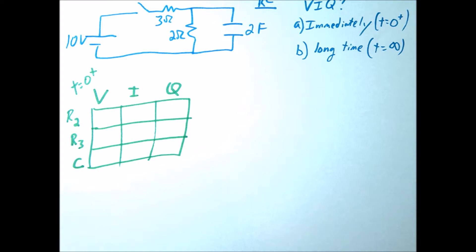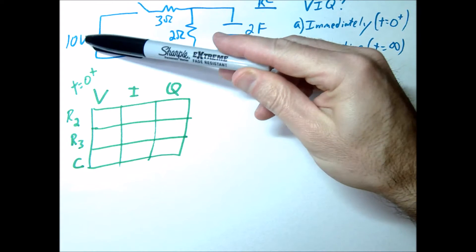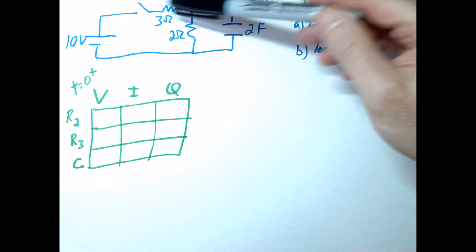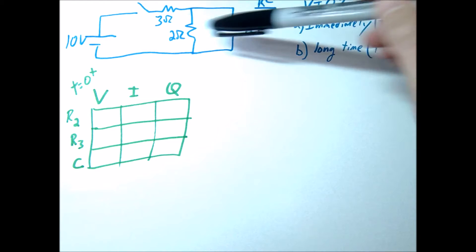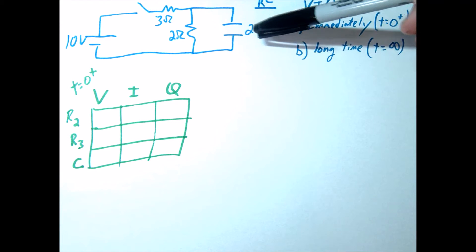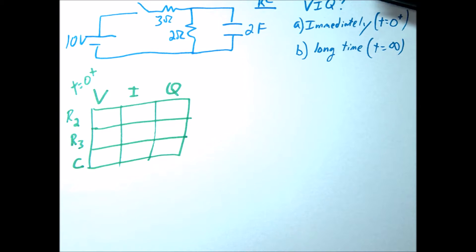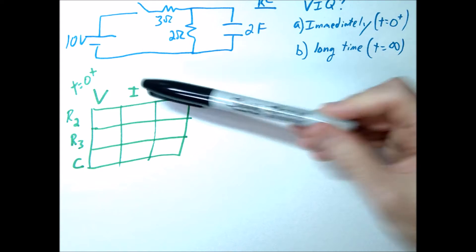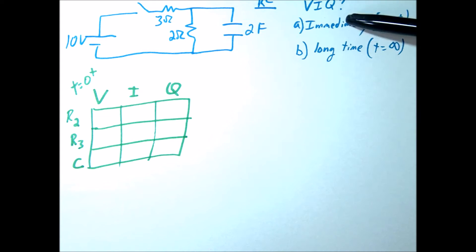So let's look at this example problem. We have our voltage source 10 volts, we're going to have a 3 ohm and a 2 ohm resistor, and then a 2 farad capacitor. We're essentially going to solve for the voltage, current, and charge immediately, and then after a long time.